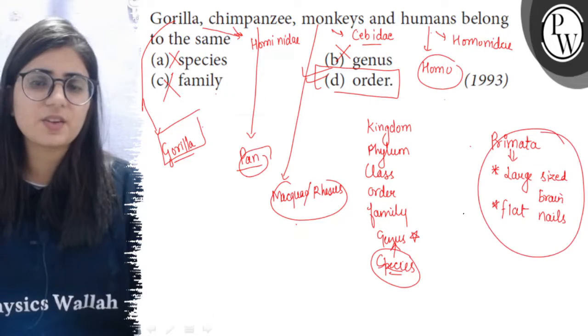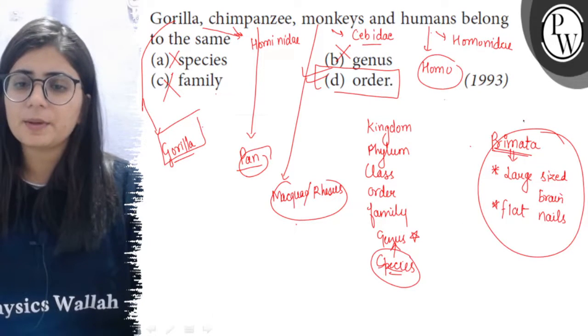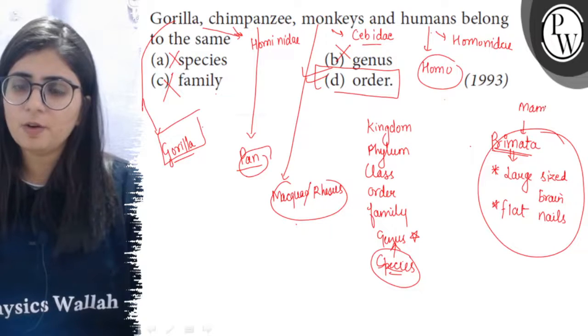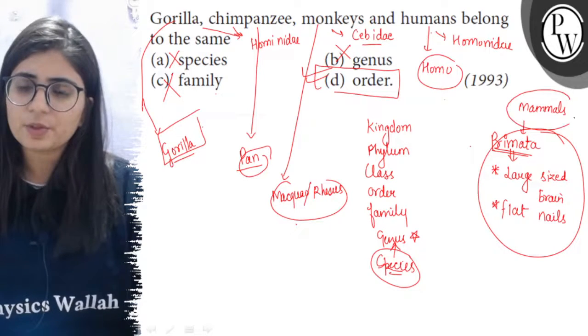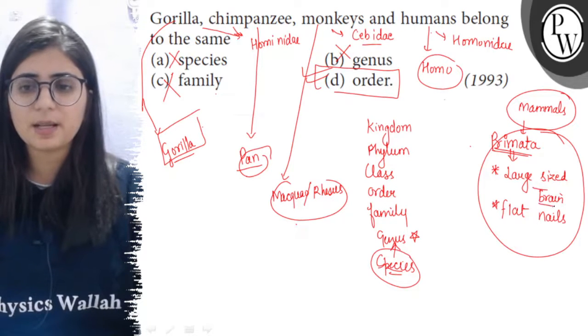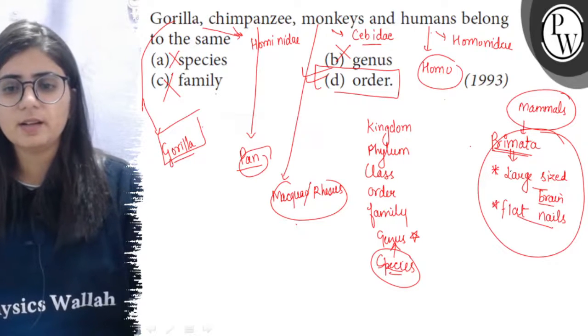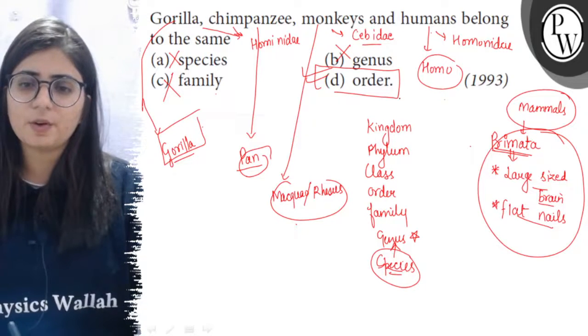Animals having large cranial capacity and flat nails are all members of class Mammalia. The members of class Mammalia with large brain size, large cranial capacity, and flat nails without claws and hooves are placed in Order Primates.